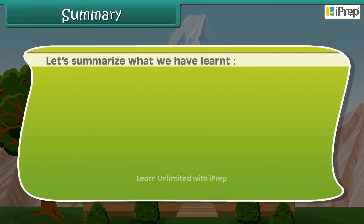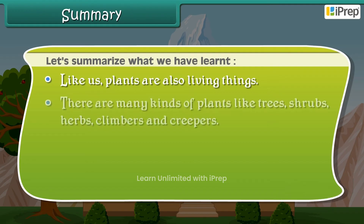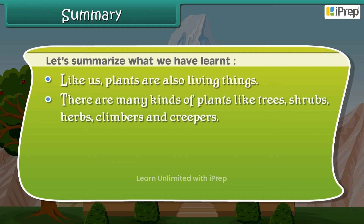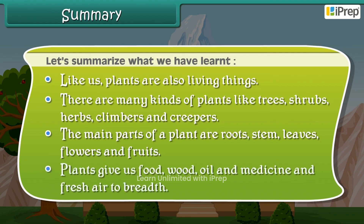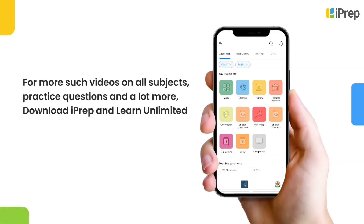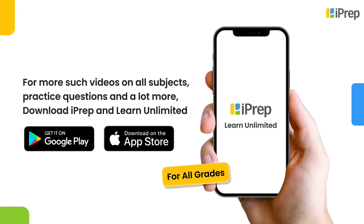Let us summarize what we have learned. Like us, plants are also living things. There are many kinds of plants: trees, shrubs, herbs, climbers, and creepers. The main parts of a plant are roots, stem, leaves, flowers, and fruits. Plants give us food, wood, oil, medicine, and fresh air to breathe. For more such videos, download iPrep and learn unlimited.